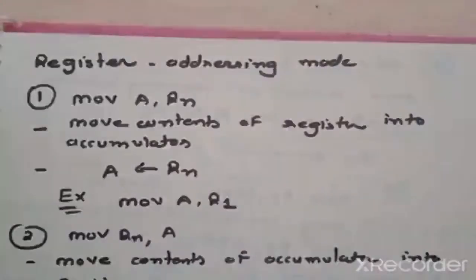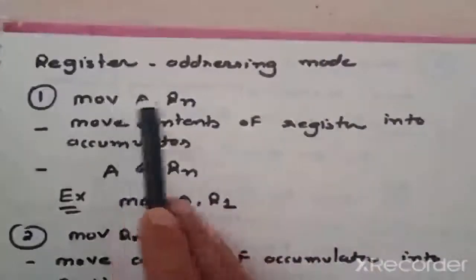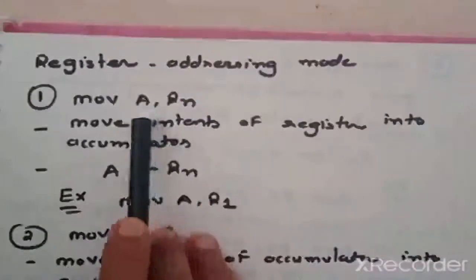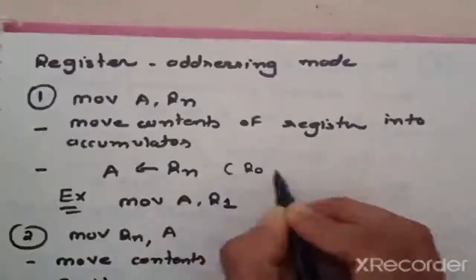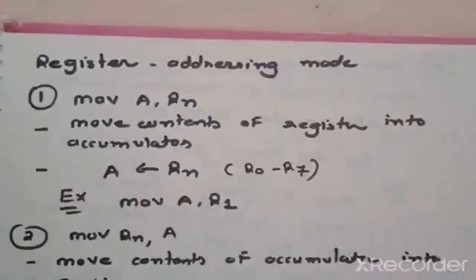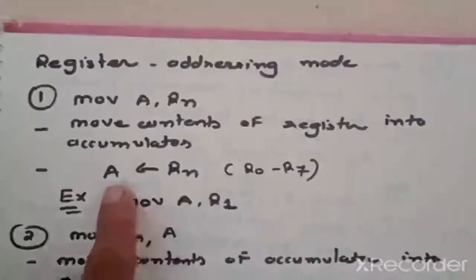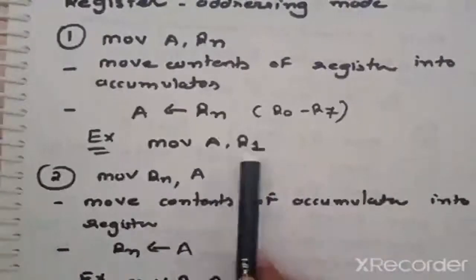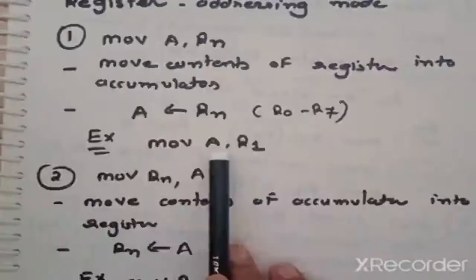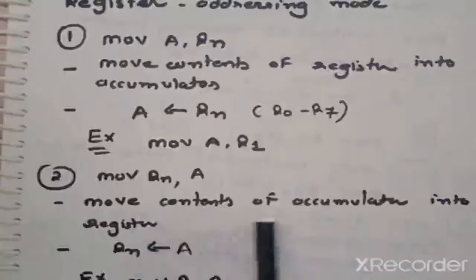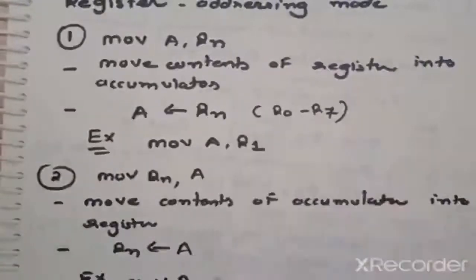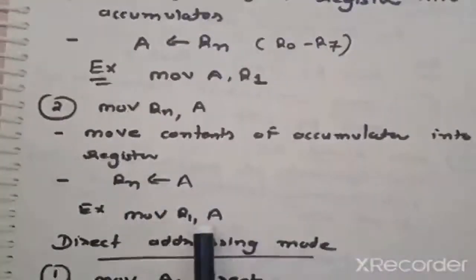Second part is register addressing mode. In register addressing mode, the instruction MOV A, Rn transfers the content of Rn into accumulator. Rn means registers R0 to R7 from any of the four register banks. Example: MOV A, R1 — content of R1 is transferred to accumulator. The reverse instruction MOV Rn, A moves content of accumulator into register Rn (R0 to R7). Example: MOV R1, A — content of accumulator is transferred to R1 register.